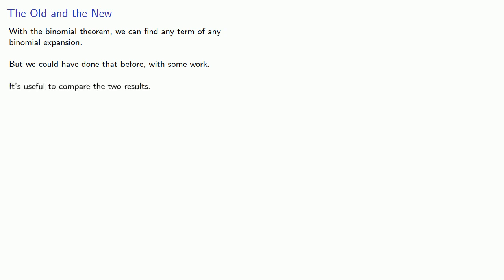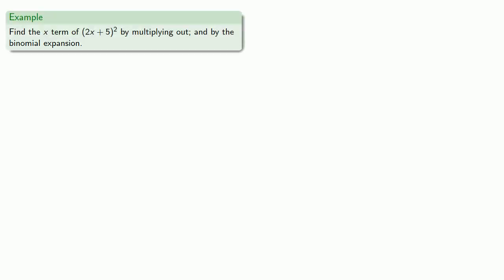Now the important thing is to trust me, I'm on the internet, and so everything I say must be the absolute truth. Because if it's not true, you couldn't put it online, right? With the binomial theorem we can find any term of any binomial expansion, but we could have done that before with some work. And it's useful to compare the two results. Anytime somebody presents you with a new way of doing things, it's nice to check and make sure you're still getting the same results.